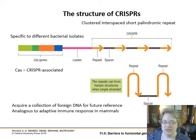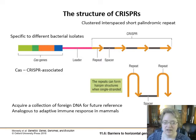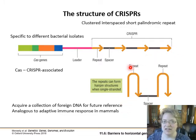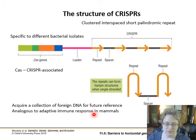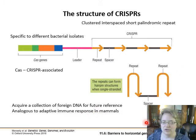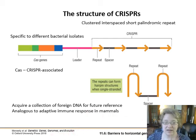What CRISPR basically means is that bacteria — the system originates from bacteria — acquire a collection of foreign DNA for future reference. They're essentially saying: this was a problem, and I'm going to keep it in my genome so I can check if something I encounter again is going to be a problem. This is analogous to the adaptive immune response in mammals, where B cells are memory cells that remember specific antigens they were exposed to before. This is a bacteria's analogous system.